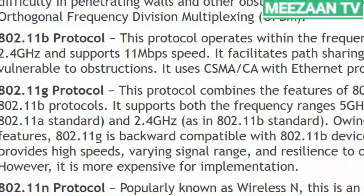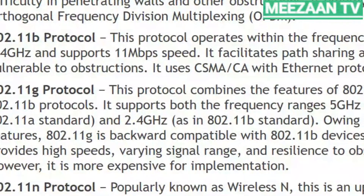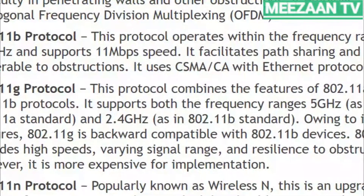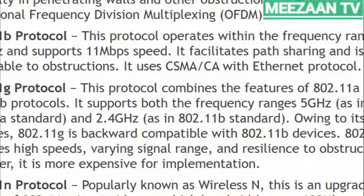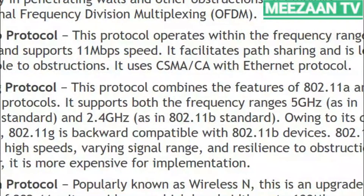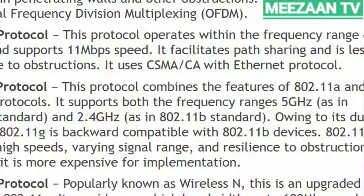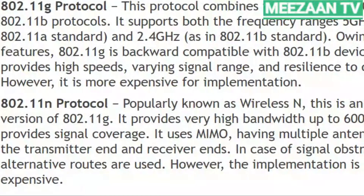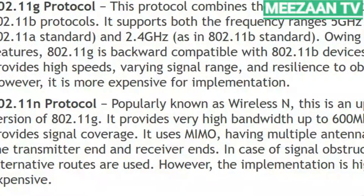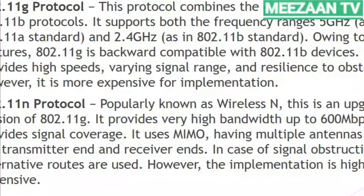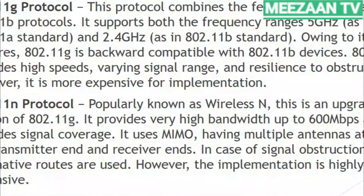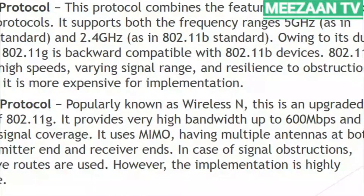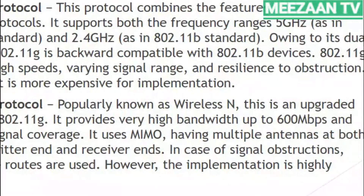The 802.11g protocol combines features of 802.11a and 802.11b, supporting both the 5 GHz and 2.4 GHz frequency ranges. It is backward compatible with 802.11b devices, providing high speeds, varying signal range, and resilience to obstructions, though it is more expensive to implement. The 802.11n protocol, sometimes called wireless N, is an upgraded version of 802.11g providing bandwidth up to 600 Mbps. It uses MIMO with multiple antennas at both transmitter and receiver; alternative routes are used in case of signal obstruction, though implementation is highly expensive.